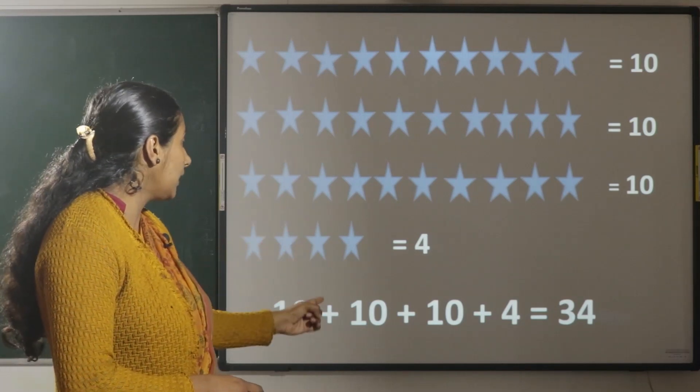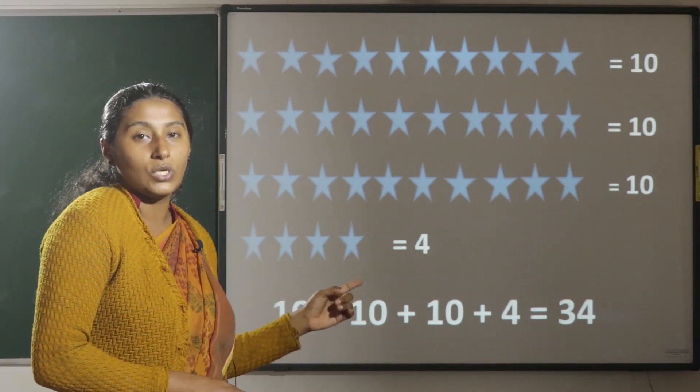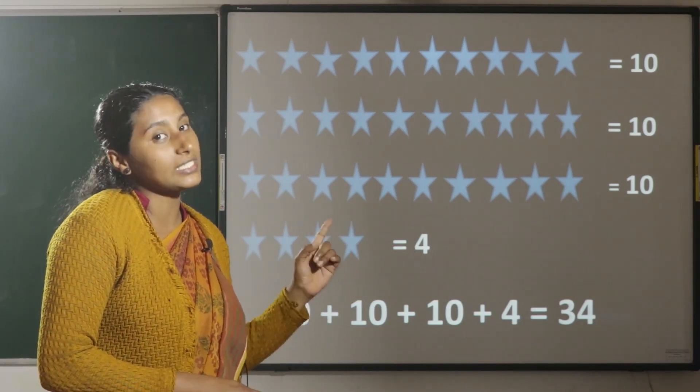20 plus 10 is 30. 30 plus 4 is 34. So, there are 34 stars.